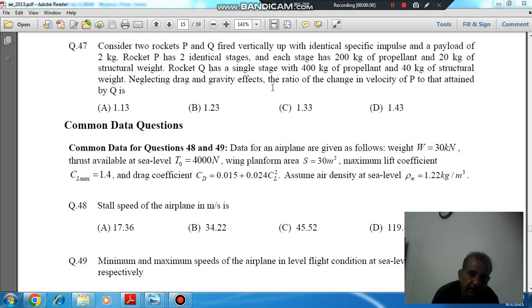Neglecting drag and gravity effects, the ratio of change in velocity attained by Q to P is: option A 1.13, option B 1.23, option C 1.33, and option D 1.43.